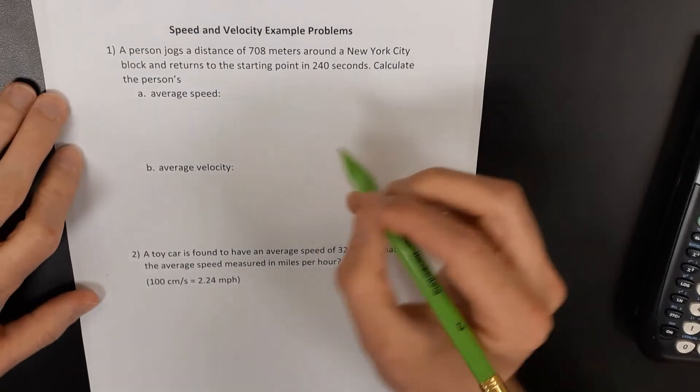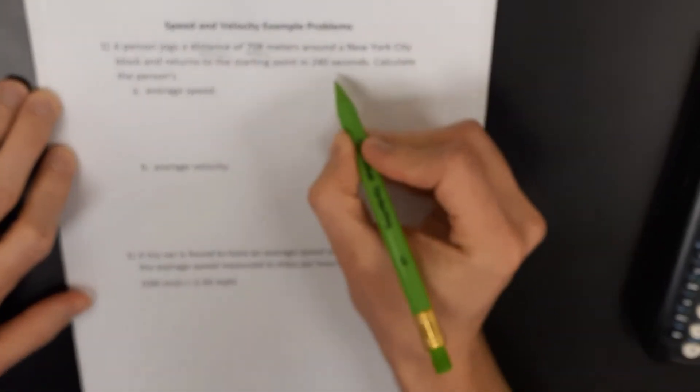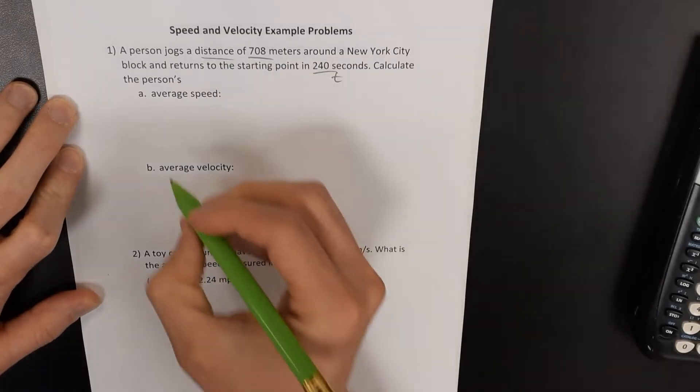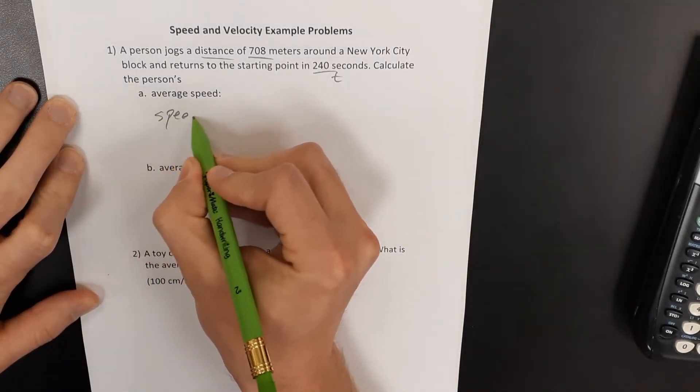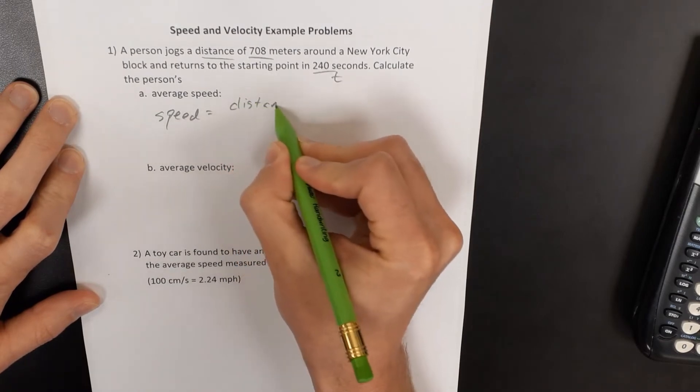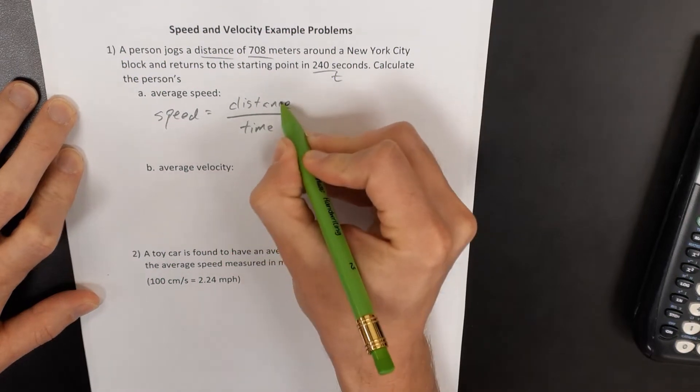So we're told right here that we have a distance of 708 meters with a time of 240 seconds. Well, an object's speed is always equal to the distance an object travels divided by the time it takes to travel that speed.